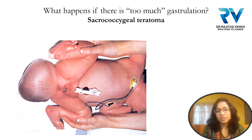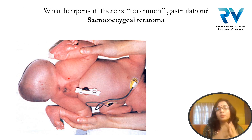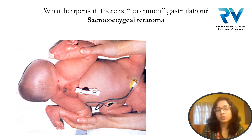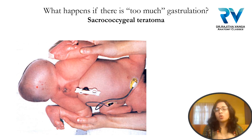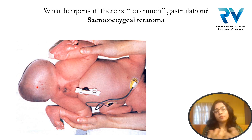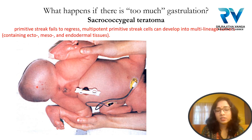If the primitive streak persists after the fifth week, it keeps dividing. Since the primitive streak forms all three germ layers, its persistence results in too much gastrulation, leading to sacrococcygeal teratoma. This teratoma contains derivatives of all three germ layers — you may observe tooth, hair, muscles, or glands. Surgical intervention is required after birth.